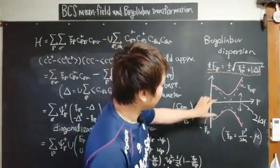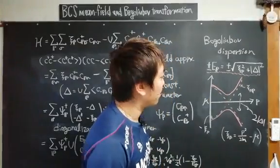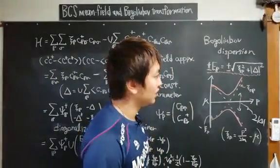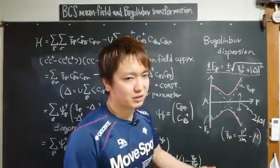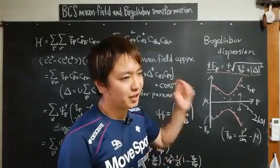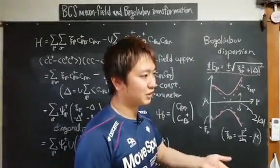So then you can find some energy gap here. This corresponds to the binding energy of the Cooper pairs. This means if we want to excite a single particle from the superconductor, we have to break the Cooper pairs to obtain a single particle.